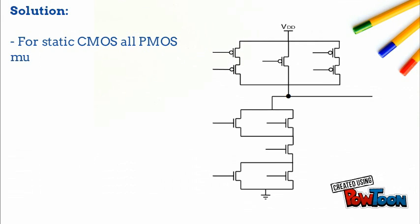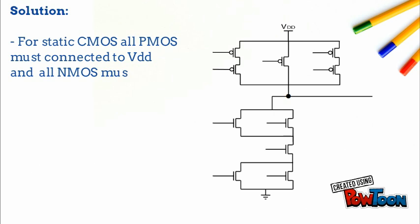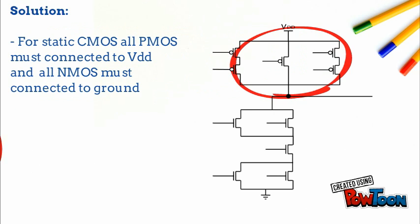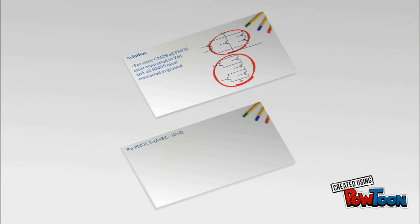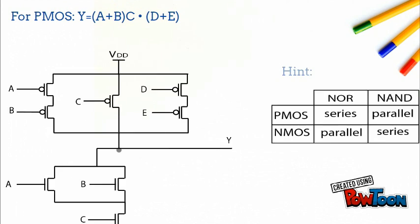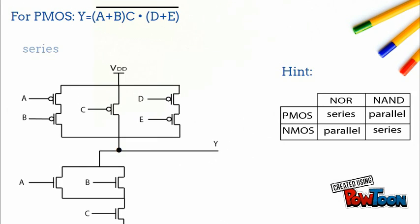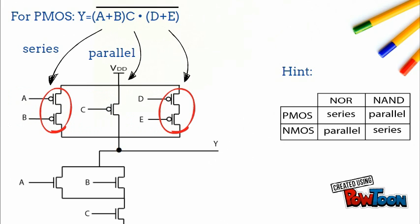Solution: For static CMOS, all PMOS must be connected to VDD and all NMOS must be connected to ground. For PMOS: A is in series with B, parallel to C, and A is parallel to D, with D in series with E.